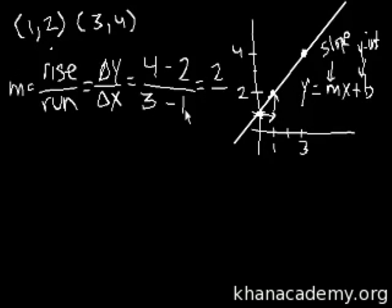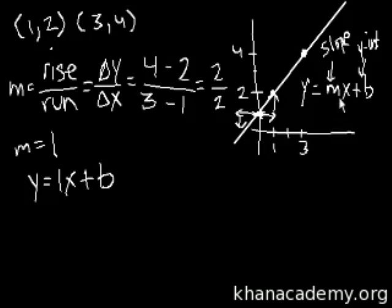Slope of the line is 1. The slope is 1. This means when x increases by 1, y increases by 1. The slope is 1, so our equation is y equals 1x plus b, which is y equals x plus b.